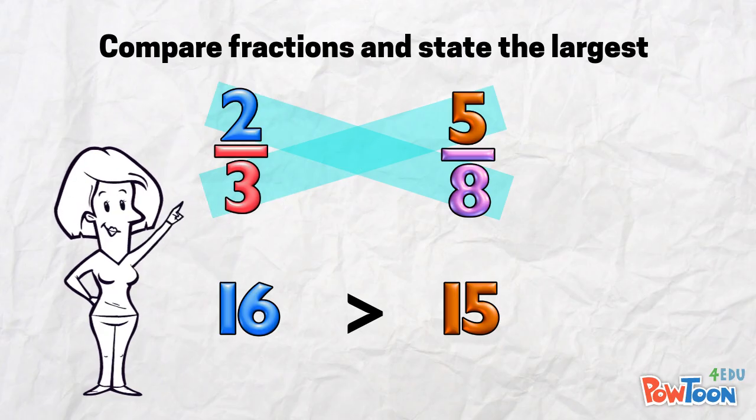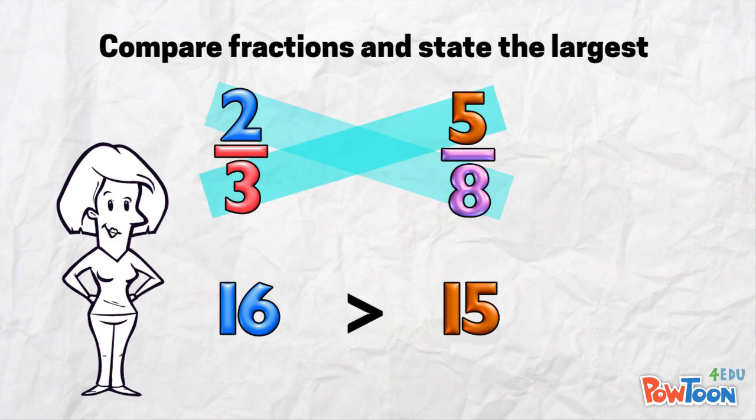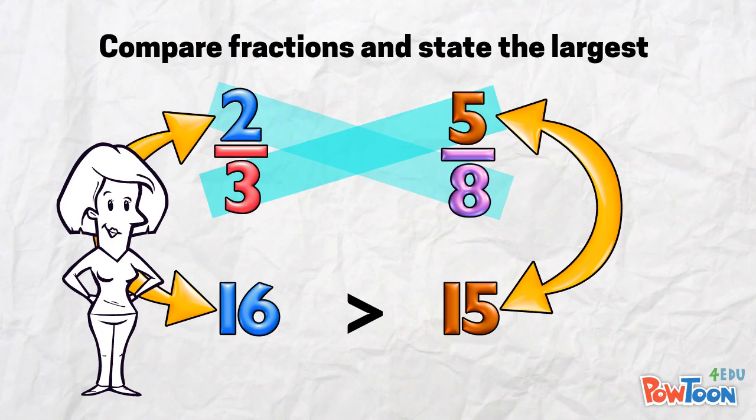This cross pattern we used to get our new numerators is why this is called cross multiplication. And remember, the new numerator value belongs under the old numerator.